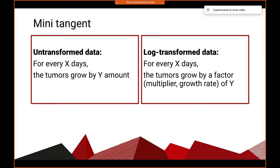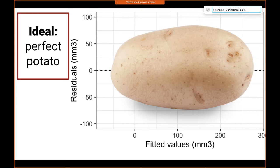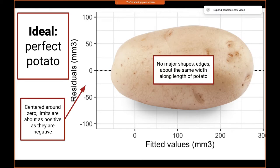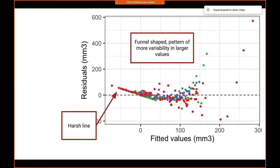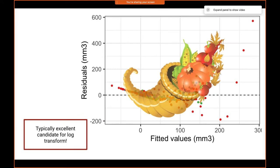Here's a diagnostic plot I use when analyzing if a model is good. I took Amy's data, ran it through a linear mixed effects model, and got this residual plot — residuals versus fitted. The main reason to use transformations is to fix this plot and replicate the true data generating process. What residuals are supposed to look like I refer to as a 'perfect potato' — just a cloud with no patterns, no major shapes or edges, approximately centered around zero. My residuals here have a harsh line going across and a funnel shape — more variability at larger values, tight at lower fitted values — kind of like a cornucopia shape. Typically if we see this, it's an excellent candidate for a log transformation.